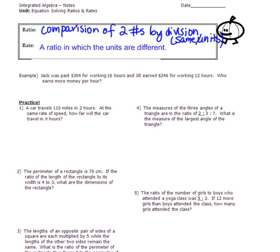Example: Jack was paid $304 for working 16 hours and Jill earned $246 for working 12 hours. Who earns more money per hour? Question: ratio or rate? Well, the way to answer that is to first think about if I could convert dollars into hours. No, I can't convert dollars into hours.